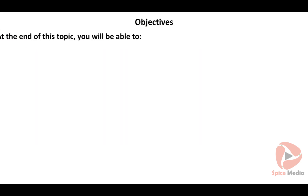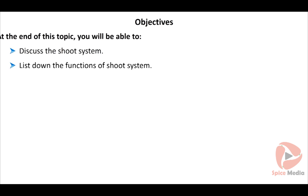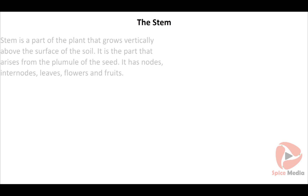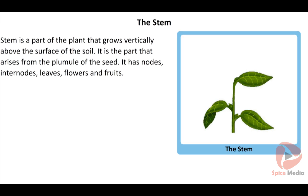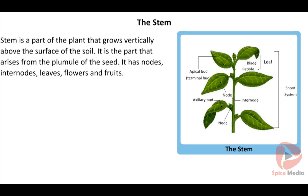At the end of this topic, you will be able to discuss the shoot system and list down its functions. The stem is a part of the plant that grows vertically above the surface of the soil. It arises from the plumule of the seed and has nodes, internodes, leaves, flowers and fruits.